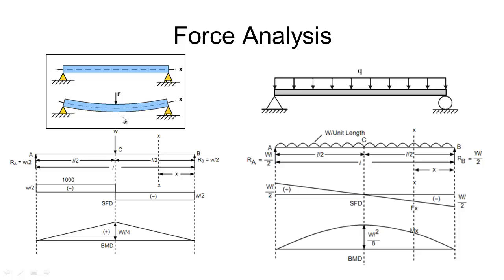If it wasn't split evenly, we might have to do a sum of moments around one of the supports where the net moment at the support is zero, and then use the distances to calculate what the other reaction is.